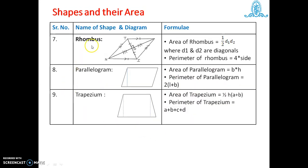Next, rhombus. Area of rhombus is equal to half d1 into d2, where d1 and d2 are the diagonals. The perimeter of rhombus is equal to 4 multiplied by the side — that is, the sum of all sides. For parallelogram, opposite sides are also equal, so area of parallelogram is equal to base into height, and perimeter is 2(l plus b) since opposite sides are the same.